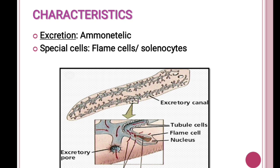Regarding excretion, Platyhelminthes are ammonotelic. The nitrogenous waste they eliminate is ammonia. For this they have special cells known as flame cells.